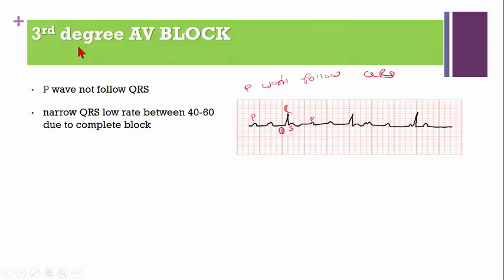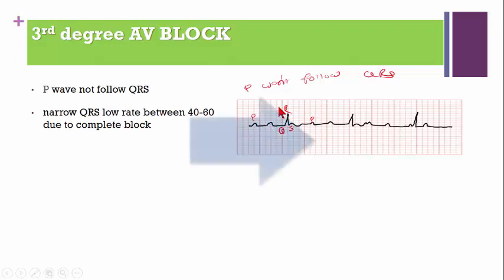Lastly, we can see the third degree AV block. The P wave is not followed by the QRS complex, and a narrow QRS occurs at a low rate between 40 to 60 due to complete block. Here the P wave is not following the QRS complex.